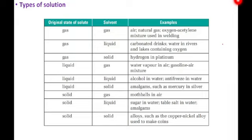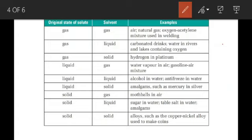There is no strict criteria for solute and solvent. We can use different phases. For example, gas can be the solute as well as gas can be the solvent. Air is a homogeneous mixture — air is a solution in which both the solute and the solvent are gases.